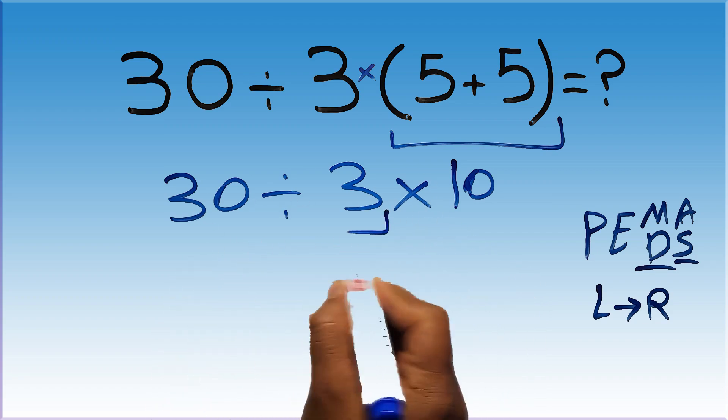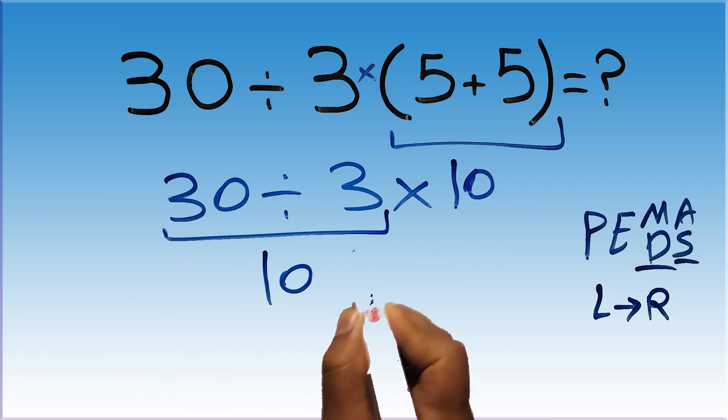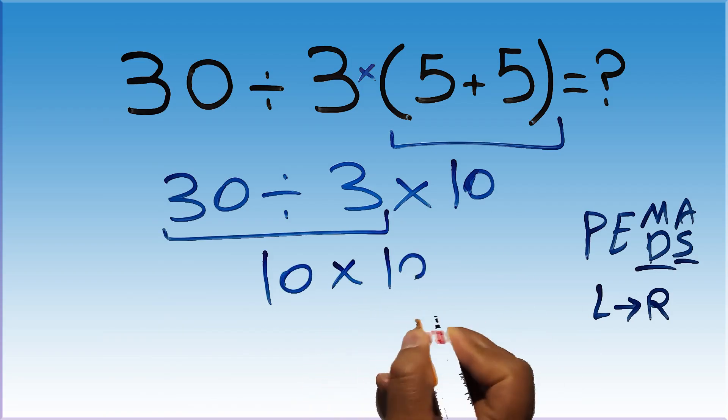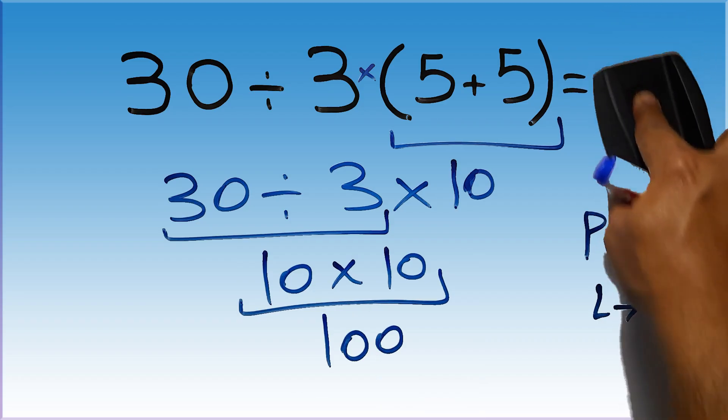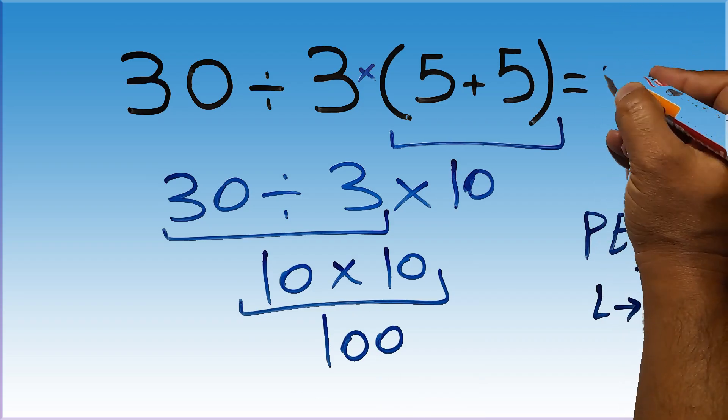30 divided by 3 is just 10. So 10 times 10, which equals 100. And this is our final answer to this problem. The correct answer is 100.